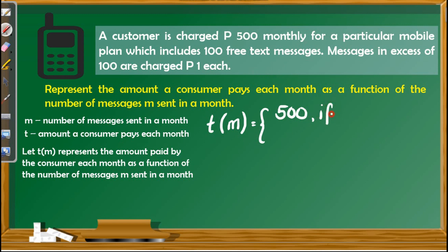M should be less than or equal to 100. You may have only less than 100, and the lowest possible number of messages is 0 — meaning you still pay P500 because you registered to the plan but did not use any free text messages. So M is greater than or equal to 0. This gives us the first function.